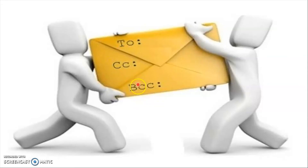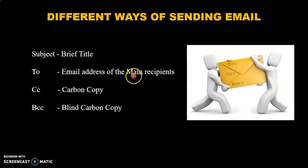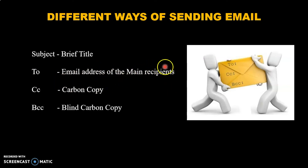Then we are going to see To, CC, and BCC. These three are used to send an email to multiple persons. In the Subject field, we need to give the brief title of the content — for example, if you are sending an invitation for a birthday party, your subject should be 'Birthday Invitation'. In the To field, you should include the email address of the main recipient. CC means Carbon Copy, and BCC means Blind Carbon Copy.